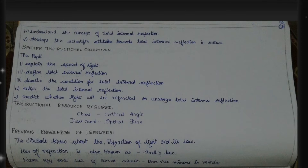The student also develops a scientific attitude towards total internal reflection in nature. Specific instructional objectives: the pupils explain the speed of light. They define total internal reflection. They describe the conditions for total internal reflection, and predict whether light will be refracted or undergo total internal reflection.